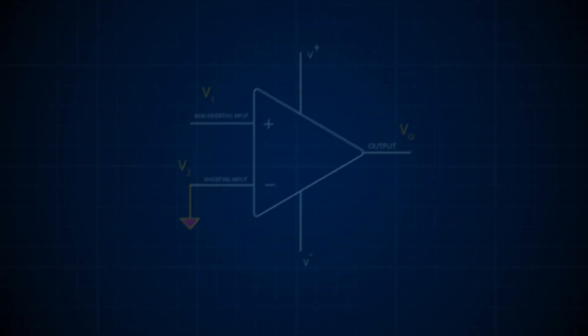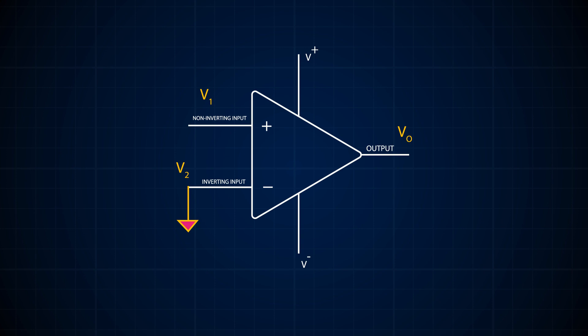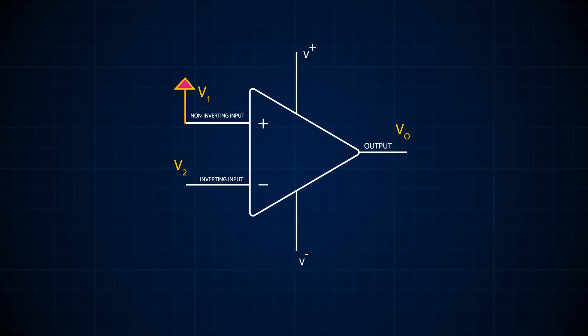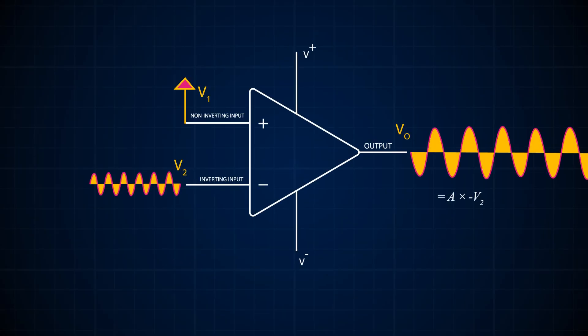You may be wondering why one of the inputs is called an inverting input and the other a non-inverting input. If we supply a 1 millivolt sine wave to V1, the non-inverting input, and ground V2, Vout will simply be A times V1, and the output will have the same phase as V1 but a much higher magnitude. When we ground V1 and supply our signal to V2 instead, Vout becomes minus A times V2. The minus sign shows that the output is now 180 degrees out of phase — in other words, the signal is now inverted.